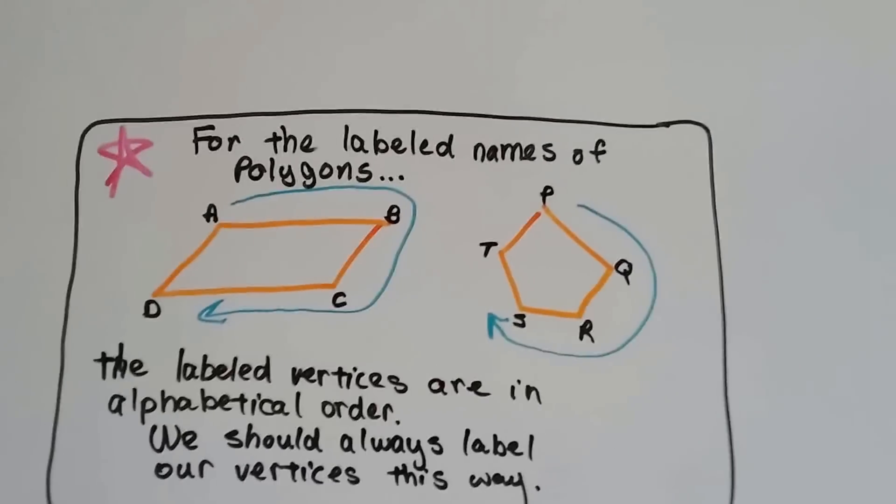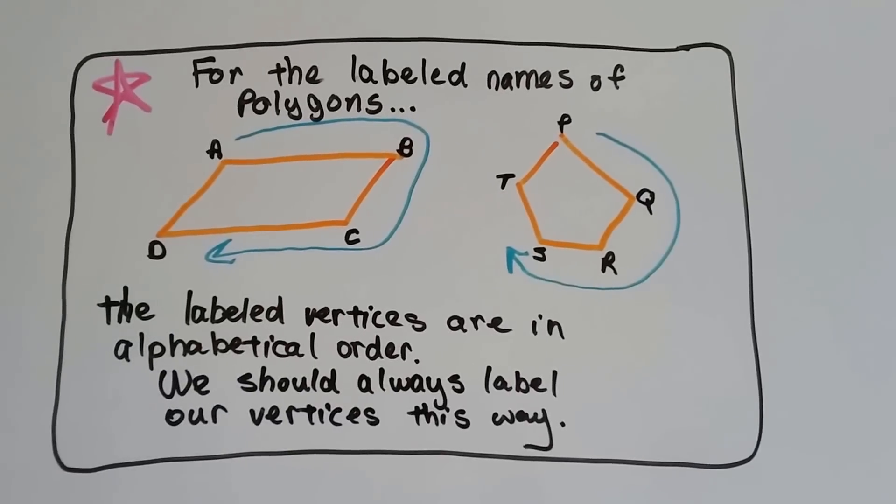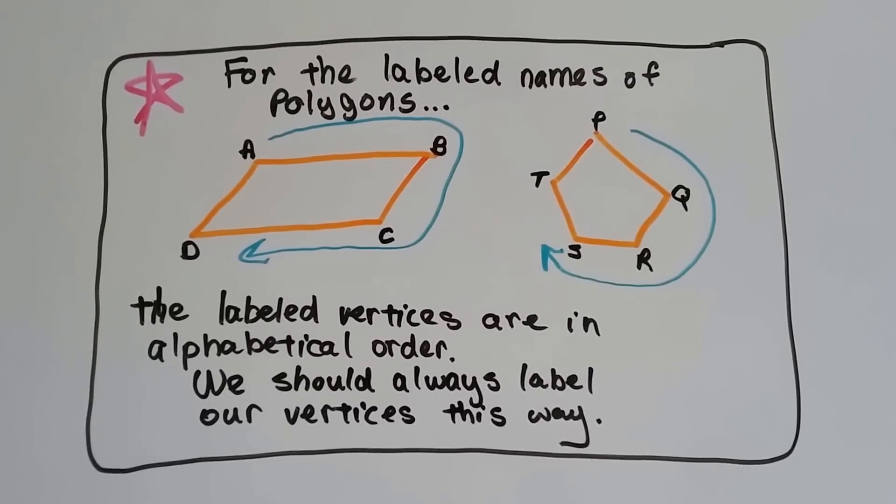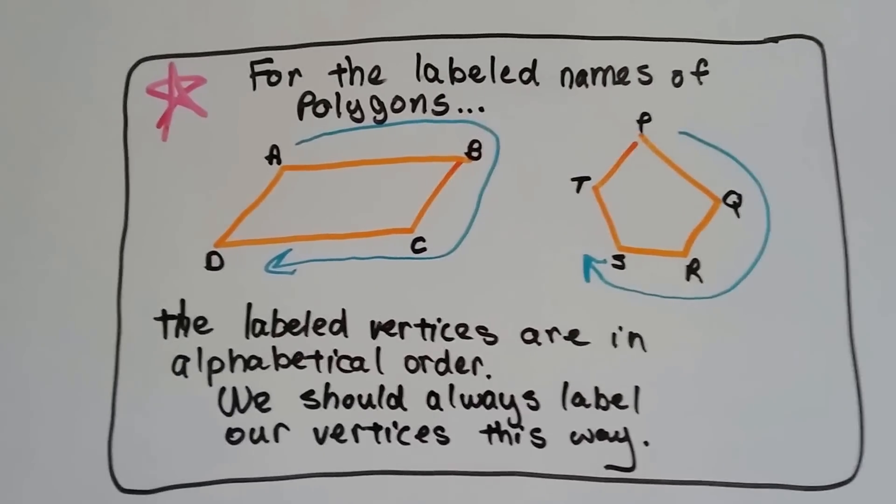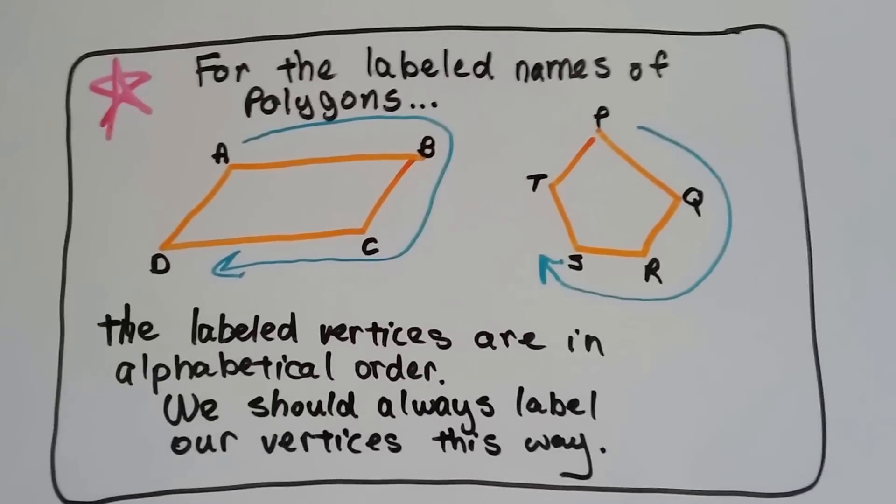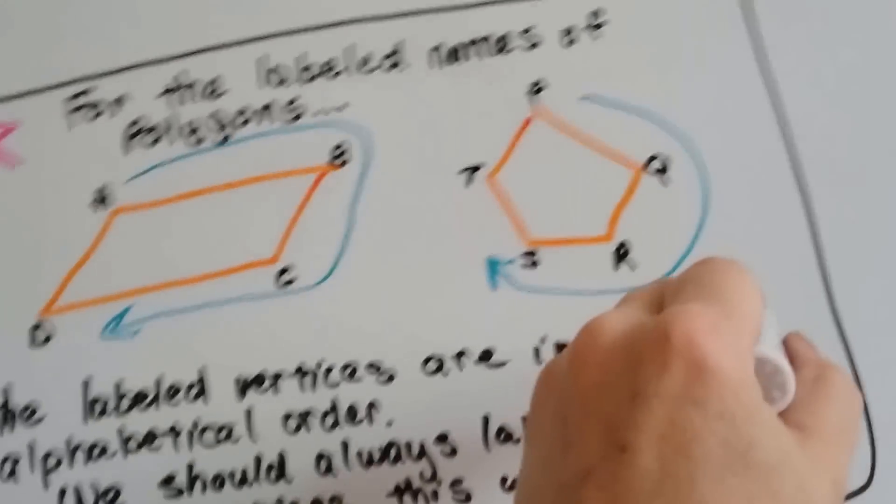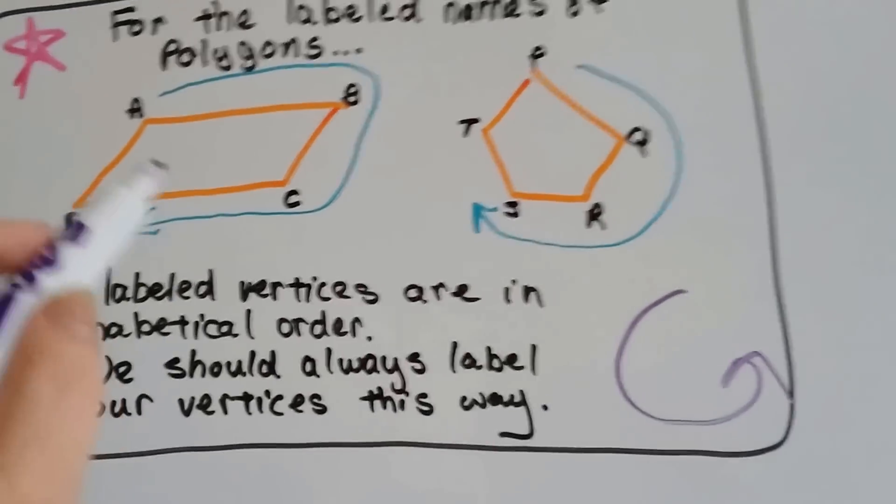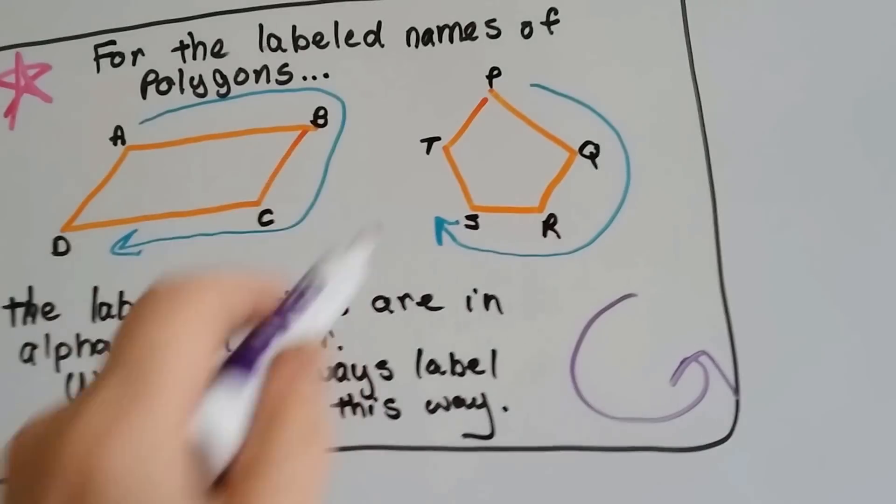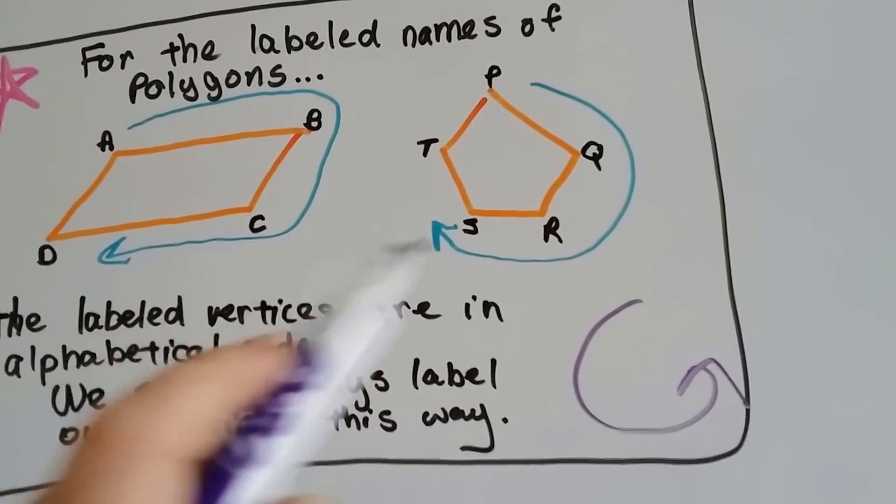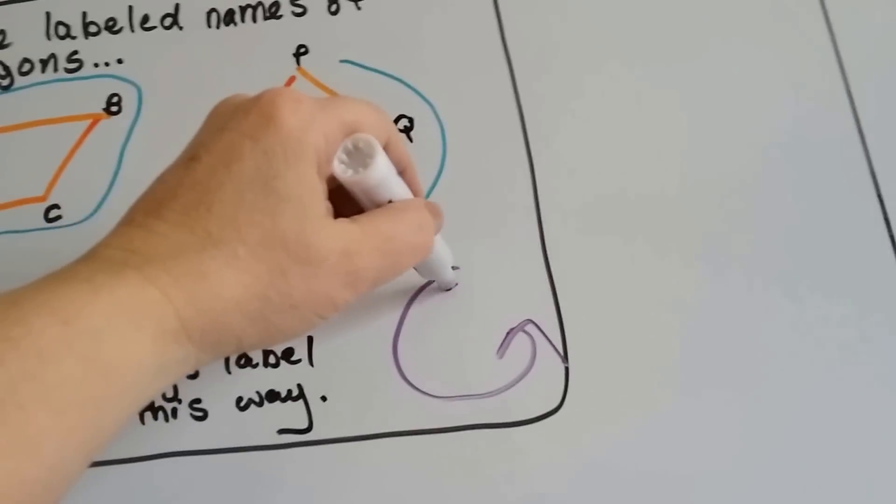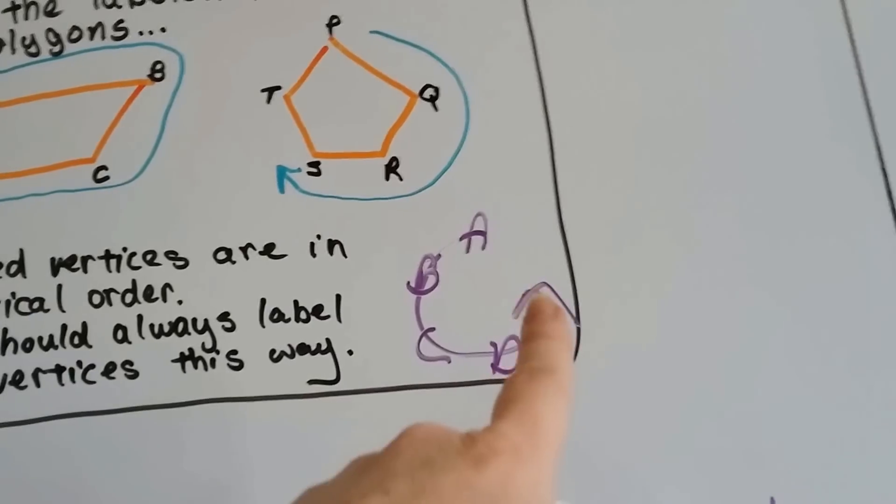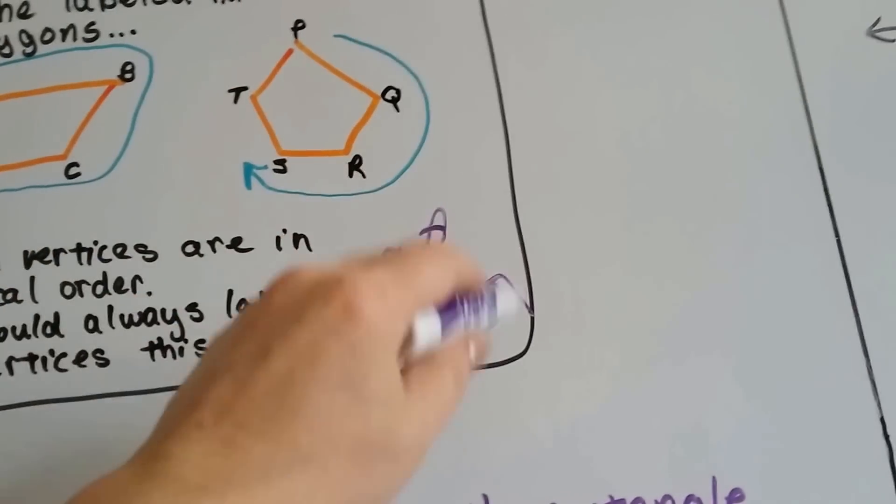Now, for the labeled names of polygons, the labeled vertices are in alphabetical order. And we should always label our vertices this way. Now, they don't have to go around clockwise. They could go counterclockwise. But if they do, they've got to be in order. So, on these, I made them go around clockwise. A, B, C, D, P, Q, R, S, T. But you could do A, B, C, D, and go around counterclockwise. But you still need to keep them in order.